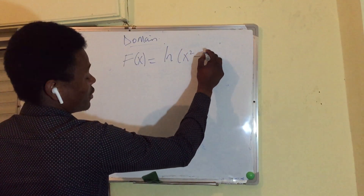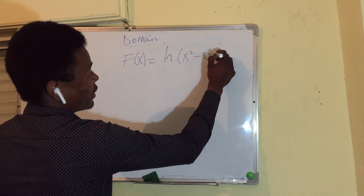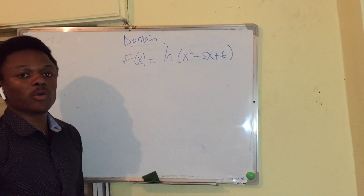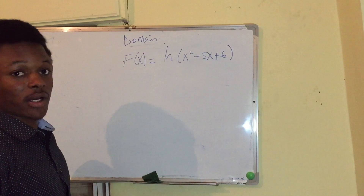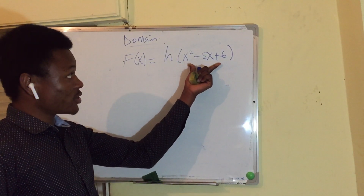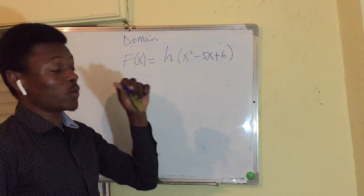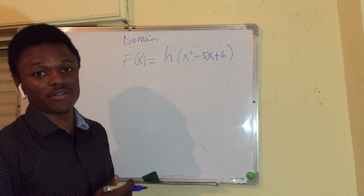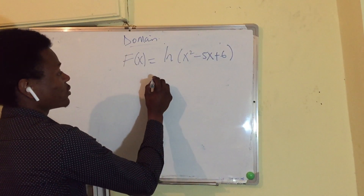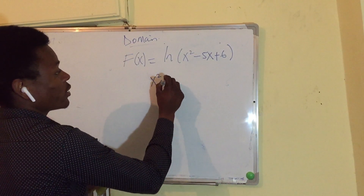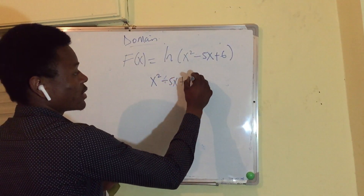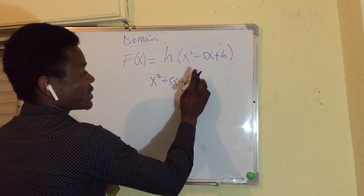Let me say the function involves a logarithm. For a logarithm function, we need the expression inside to be greater than zero — we want to avoid a negative expression or zero. So we set x² - 5x + 6 greater than zero.